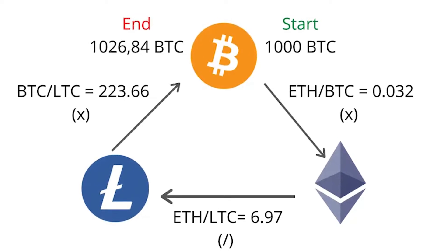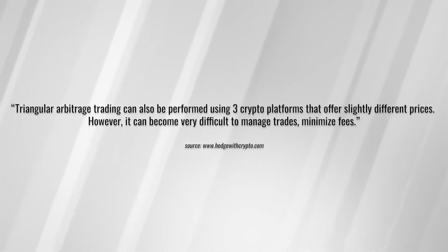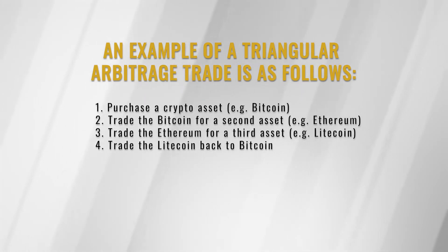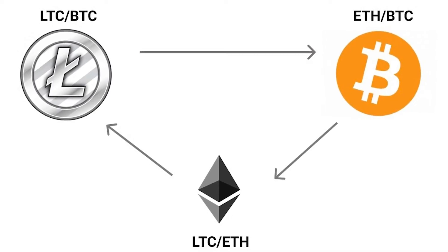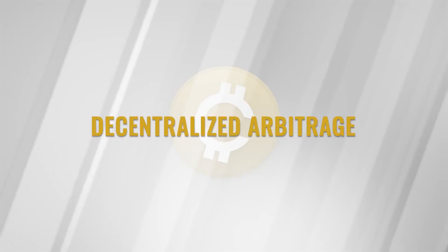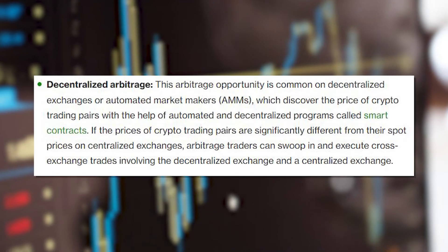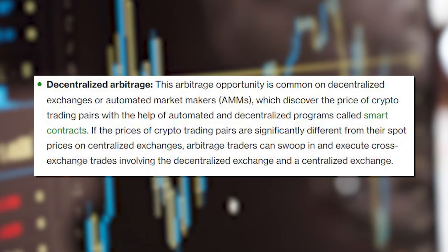Triangular arbitrage utilizes pricing inefficiencies between multiple pairs of cryptocurrencies traded on the same exchange. In this approach, an investor begins with one cryptocurrency and trades it at the same exchange for another undervalued cryptocurrency compared to the first. The investor would then exchange the second coin for a third cryptocurrency that is much overvalued in comparison to the first. Finally, the investor would exchange the third cryptocurrency for the first coin, completing the circuit slightly richer.